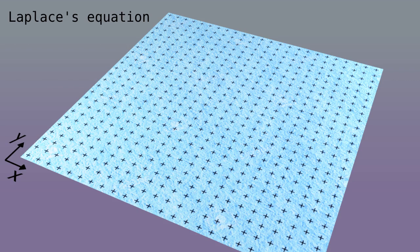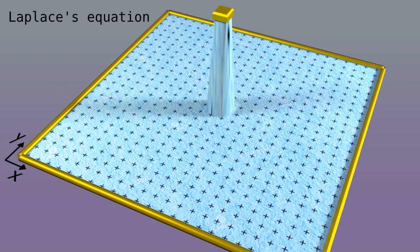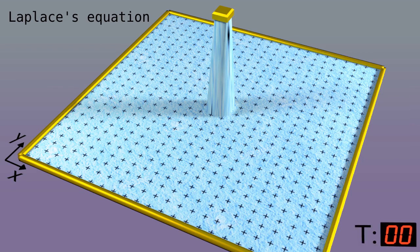Let's fix the boundary, so the membrane cannot move. And then we'll grab a piece of the membrane in the middle and lift it up. Next, we'll let the membrane settle. In other words, the springs will minimize their energy, or their Lagrangian. To keep track of progress, we'll add a clock that measures time, capital T. Ready? Here we go.